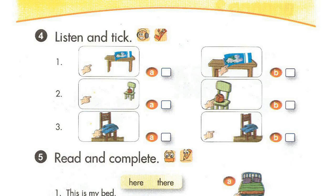2. Where's my ball? It's here, on the chair. Thanks. Let's play football. 3. Where's my coat? It's here, on the chair. Thanks, Mum.